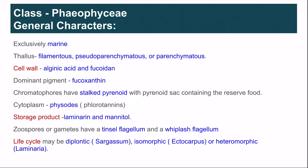The general characters of class Phaeophyceae are that the members are exclusively marine, found in seawater, and only a few genera are found in freshwater. The thallus may be filamentous, pseudoparenchymatous, or parenchymatous. The cell wall is cellulosic, and the outer layer is gelatinous; in the amorphous matrix, alginic acid and fucoidan are present.